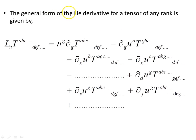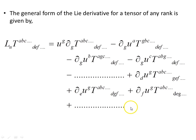Finally, the general form of the Lie derivative for a tensor of any rank is given by this expression. Following the pattern through, you can see how it generalizes. It takes a little bit of time to look at and follow through, but you should be able to apply it for a tensor of any rank. And that's the Lie derivative.